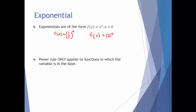For example, if you have something like f of x equals negative one-half x to the tenth plus the square root of 10 times x to the sixth minus 7x to the two-fifths, we can take the derivative of each one of these terms using the power rule.